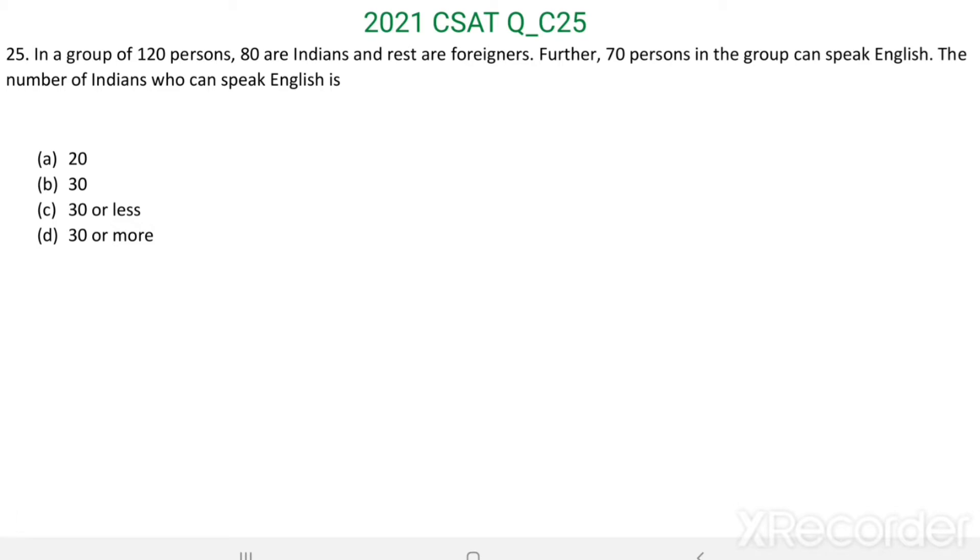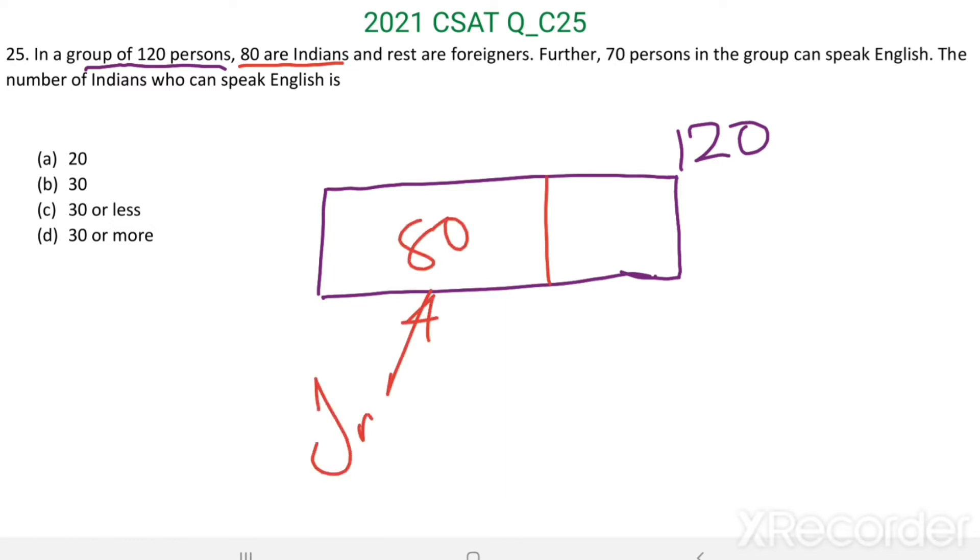There are 120 persons in a group. So we can solve this question by drawing one diagram. There are 120 persons in the group, out of which 80 are Indians. 80 are Indians and rest are foreigners. That means 120 minus 80 equal to 40 are foreigners.